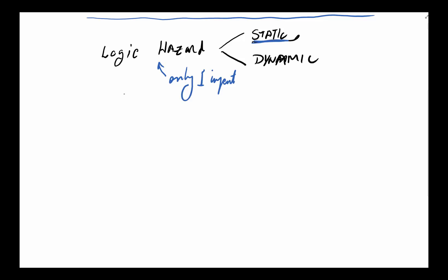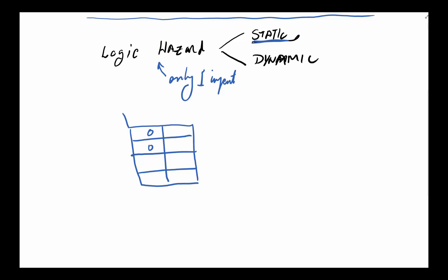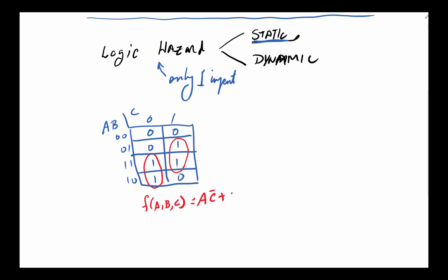Let's say we have a function described by this truth table, with variables a, b, c. The output values are 0, 0, 1, 1, 1, 0, 1, 1, 0. Using a Karnaugh map to find the minimum function, we have one prime implicant here and another prime implicant here. These are the two essential prime implicants we need. The function is f(a, b, c) = a'c + bc.